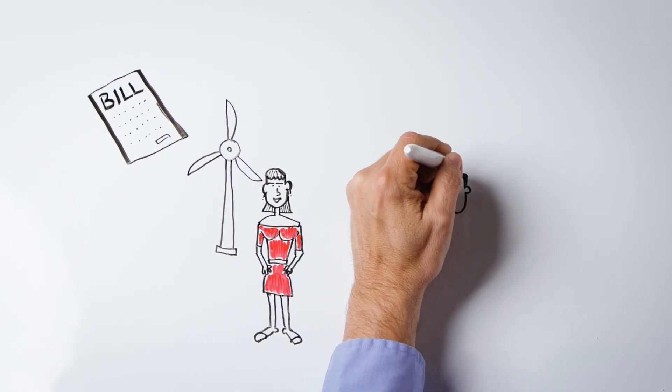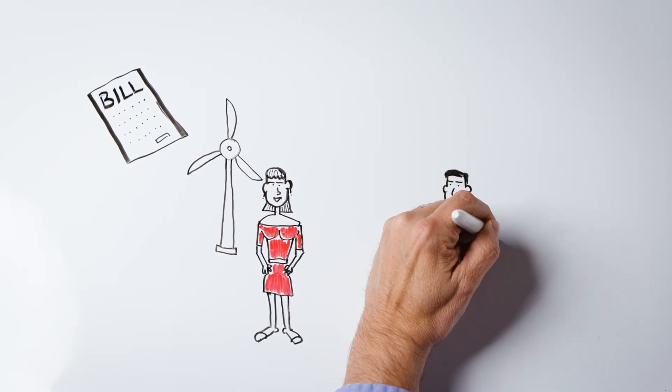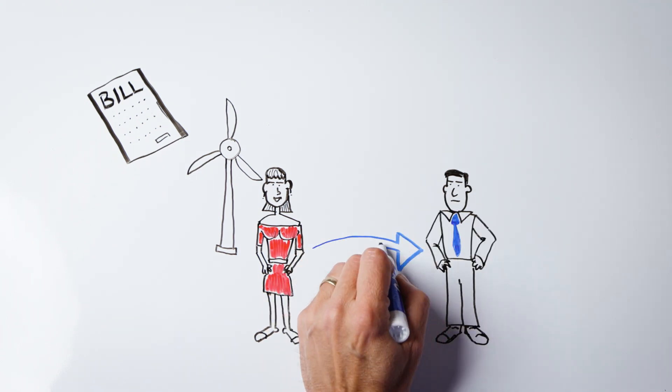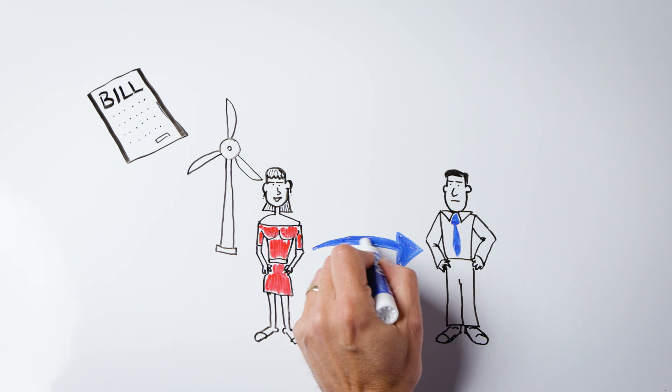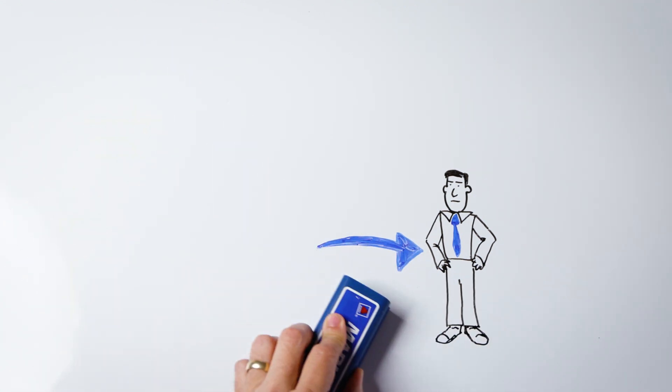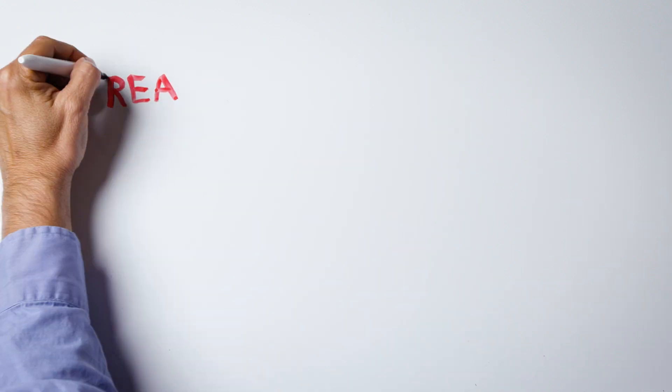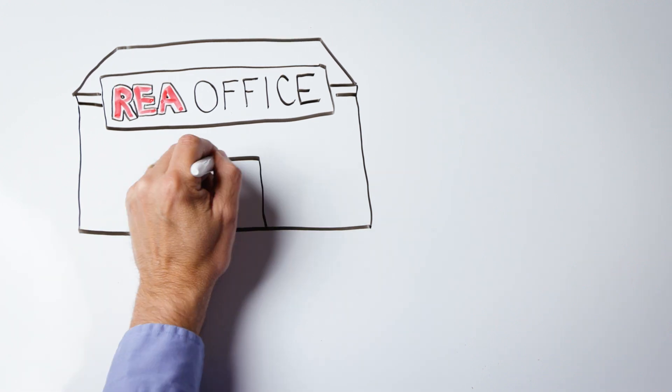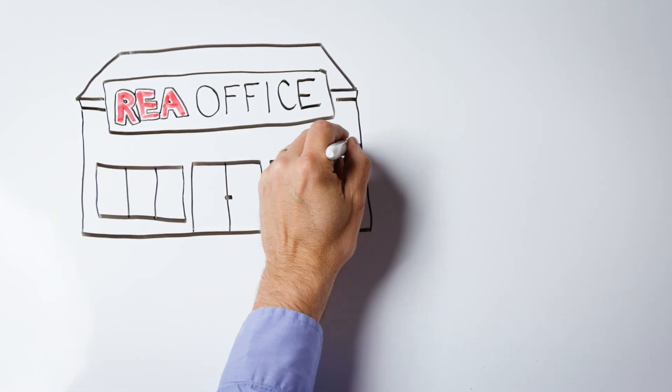While a net metering customer may be able to zero out the energy portion of their monthly electric bill, there are still costs for the utility infrastructure that they may not be fully compensated for. The net metering customer still uses the poles and wires, the utility still has the same employees and overhead, and if there is an outage, a line worker will still show up to repair the service.